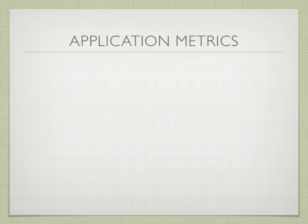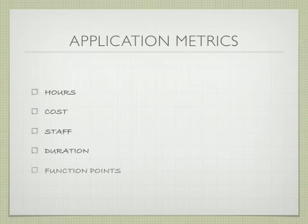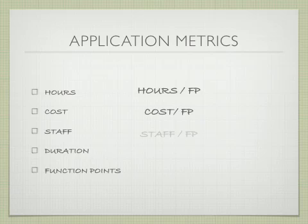Function points need to capture the same level of information as other metrics such as hours, cost, staff, and duration. Ultimately, you're going to calculate things like hours per function point, cost per function point, staff per function point, duration per function point. So it's important that the boundary be drawn around the same functionality.